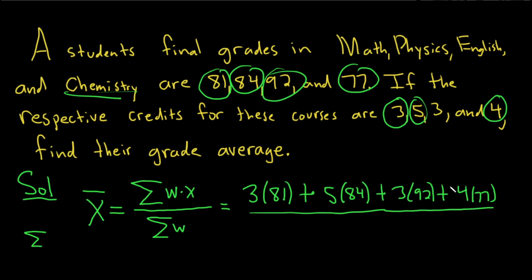And then on the bottom, you divide by the sum of the weights. So this would be the sum of, and you're just basically adding up the weights. So 3 plus 5 plus 3 plus 4.